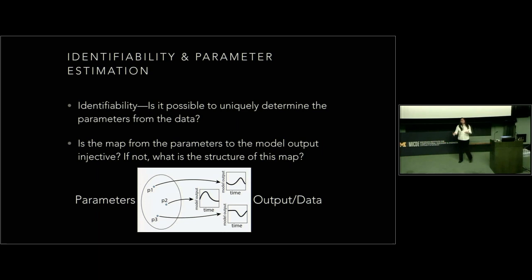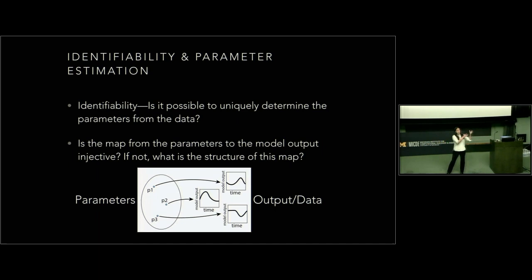So what is identifiability? Identifiability addresses this question of: given a model and data, is it possible to uniquely recover your parameters from your model and data? This is a pretty fundamental question that we deal with all the time when we're doing inference or modeling or working with data. We can frame this mathematically — if we think of our model as a map from our parameters to our output or dataset, we want to know: is that map injective? Is it one-to-one? Because if it is, then given a set of data, we can pull back and figure out what parameters generated it.